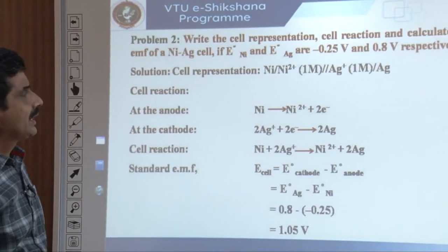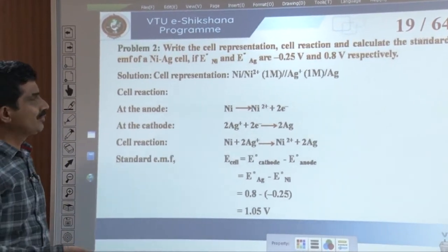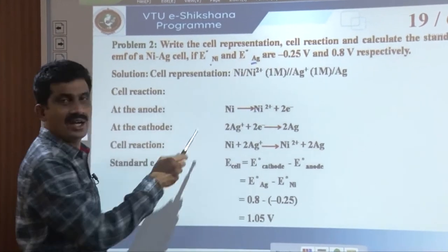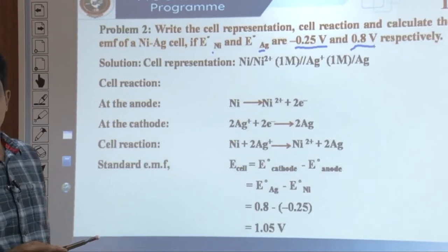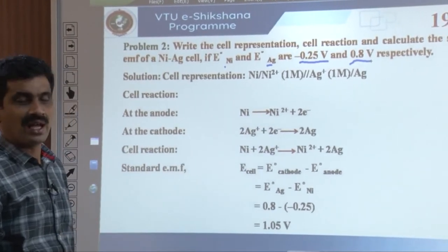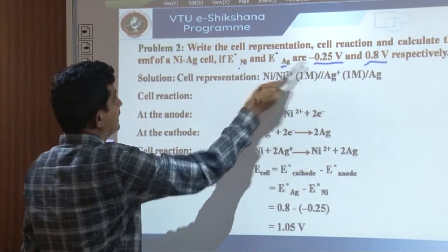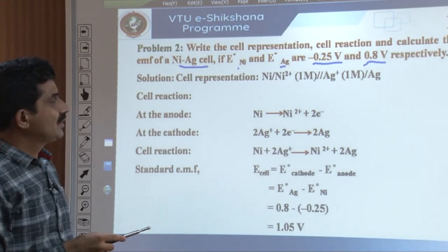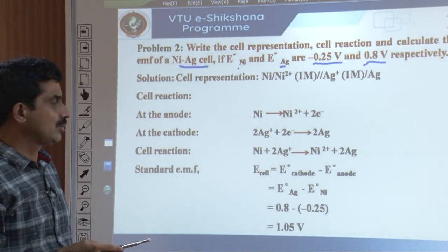Problem 2: Write the cell representation, cell reaction, and calculate the standard EMF of a nickel-silver (Ni-Ag) cell. Given: E naught of Ni is minus 0.25 volt and E naught of Ag is plus 0.8 volt. We need to determine which electrode is anode and which is cathode based on their SRP values.